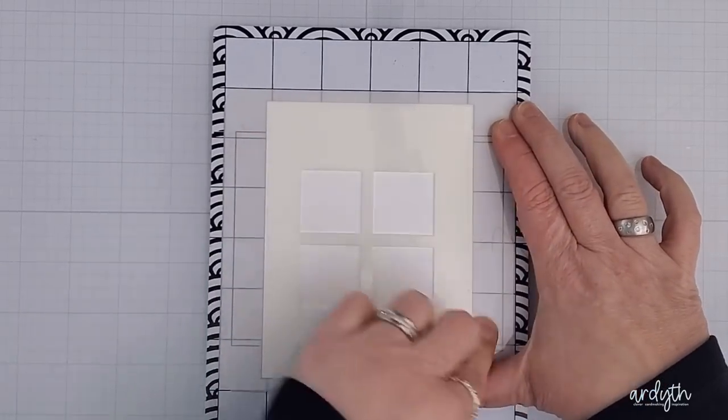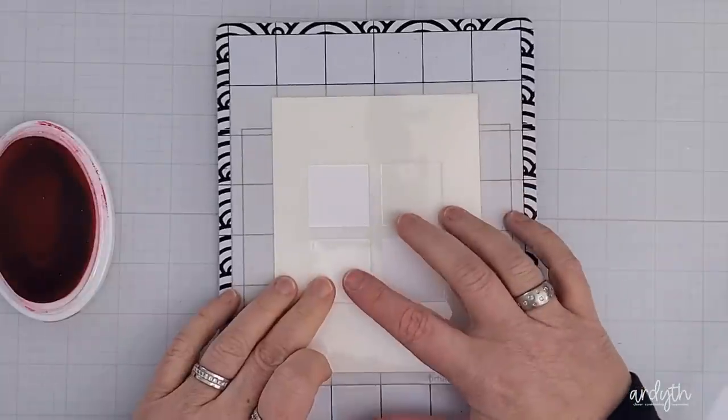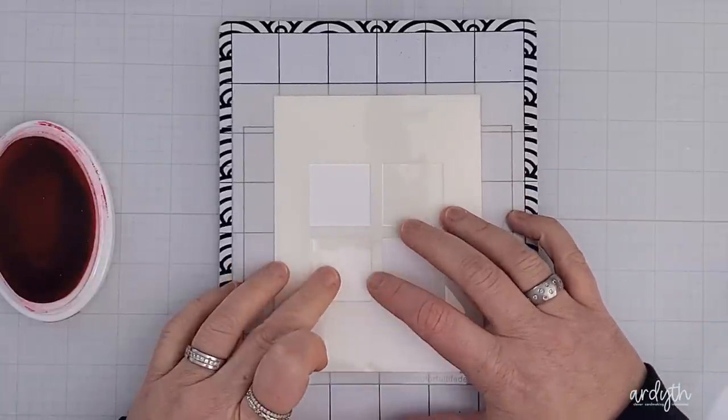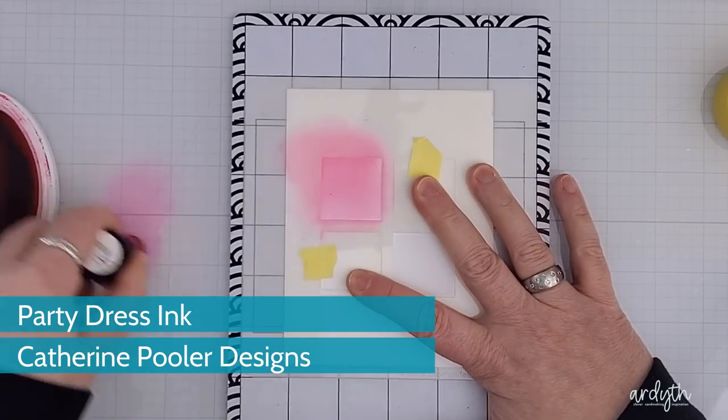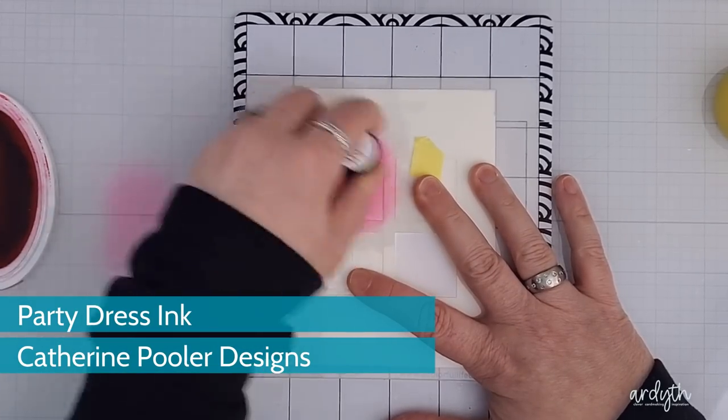I'm using the little square cutouts as masks. I'm not 100% confident about them since they seem to shift around a little bit, so I ended up taping them down before blending party dressing into that top left square. I'm putting down a lighter layer here for now.